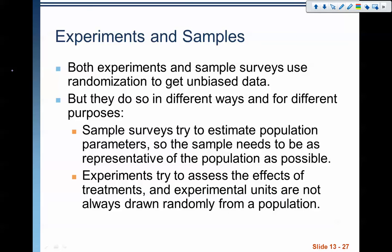Starting here: experiments and samples — the difference between what we're doing in this chapter versus Chapter 12. Both experiments and sample surveys use randomization to get unbiased data, but we do so in different ways and for different purposes. In Chapter 12, sample surveys, we're trying to estimate something from a population. We had a big population, found a sampling frame, and took a sample to get a representative result so we could determine some parameter or statistic.